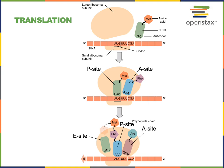ATP is used to drive endergonic reactions — the hydrolysis of ATP, an exergonic reaction, provides the energy needed to fuel endergonic reactions. An example is the dehydration synthesis reaction that forms the peptide bond between amino acids during translation. The ribosome is the enzyme that catalyzes dehydration synthesis to form the peptide bond, and the ribosome performs hydrolysis of ATP to release energy that is then used to fuel the synthesis of polypeptides from amino acids.